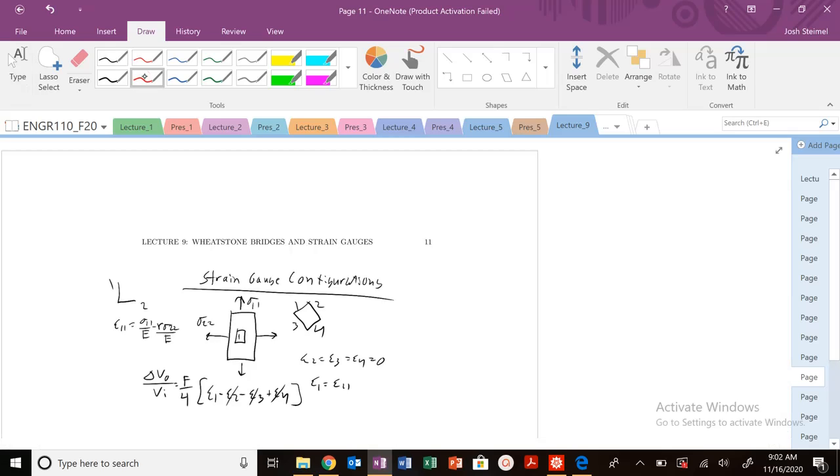So let's look at another example of our strain gauge configuration. Again, we can see here we still have only one strain gauge.